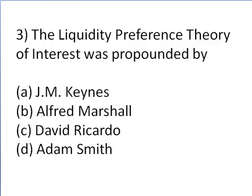The liquidity preference theory of interest was propounded by whom? First option is J.M. Keynes, second option is Alfred Marshall, third option is David Ricardo, and fourth option is Adam Smith. The theory was given by J.M. Keynes, so the first option is correct. It is the most celebrated theory of all. According to Mr. Keynes, the rate of interest is a purely monetary phenomenon — it is a reward for parting with liquidity for a specific period of time.